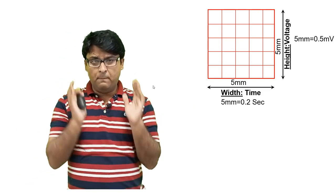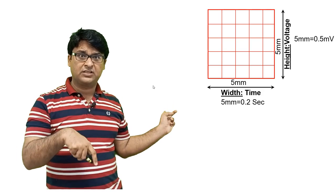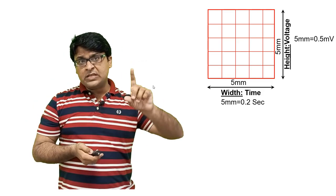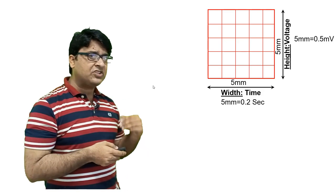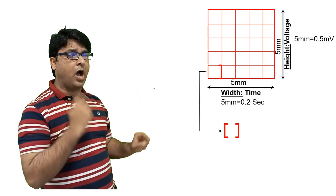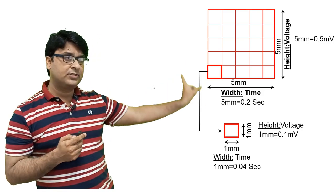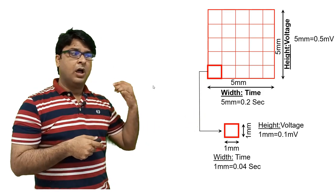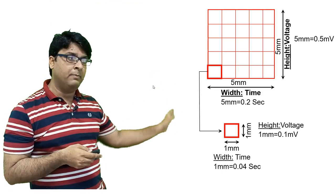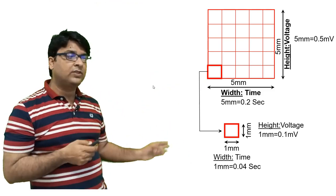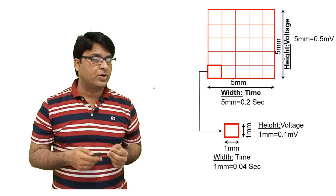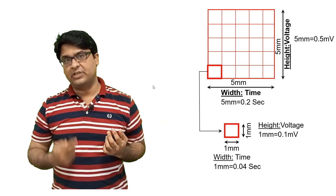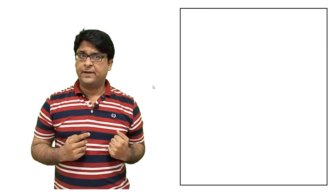This is a must for you to know — it will be an exam question: in a large box, what does 5 millimeters equal vertically and horizontally? For the small box: height represents voltage and width represents time. If 5 millimeters equals 0.5 millivolts, then 1 millimeter in height equals 0.1 millivolts. And one small box horizontally equals 0.04 seconds. Without understanding this, it will be difficult to interpret the ECG.